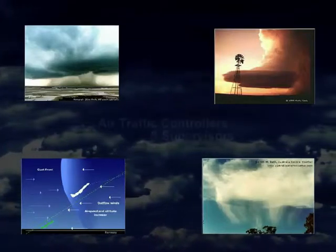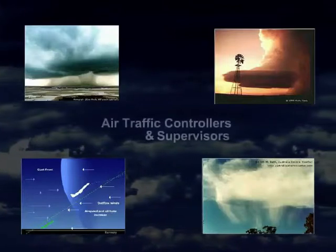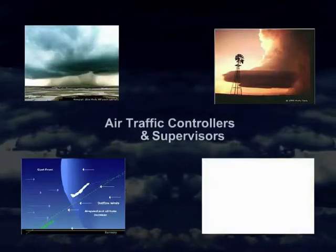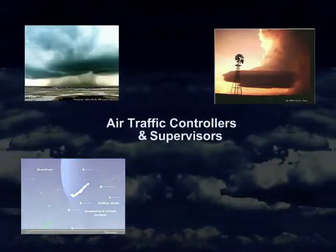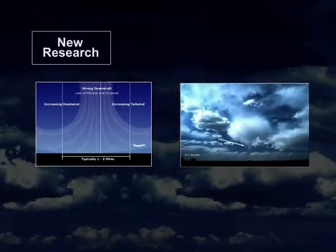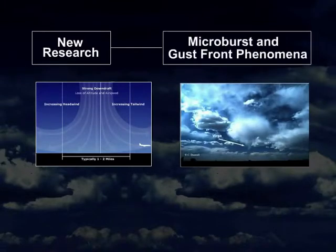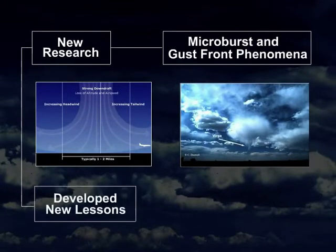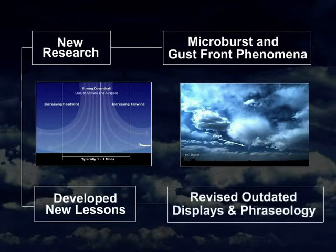This course targets air traffic controllers and supervisors, providing information about weather complexities that lead to hazardous flying conditions and the systems that are used to detect them. Since the purpose of these systems is the same and the detection methods in use are similar, this course incorporates new research on the microburst and gust front phenomena, develops new lessons on the new equipment, and revises outdated displays and phraseology to the current standard.